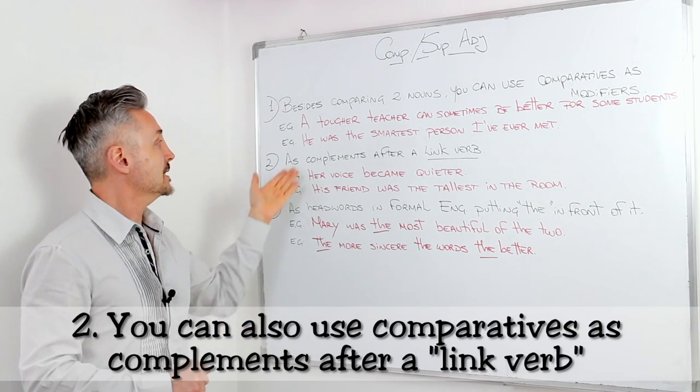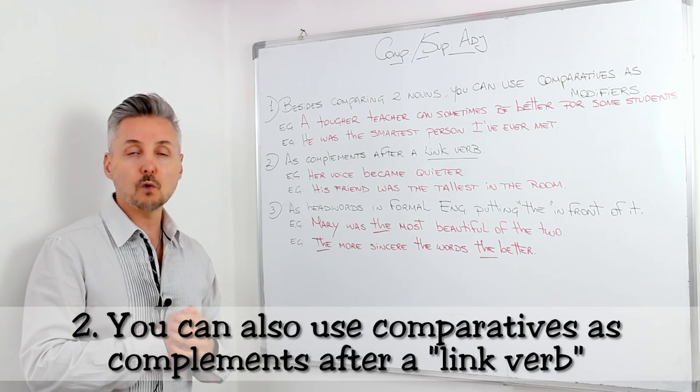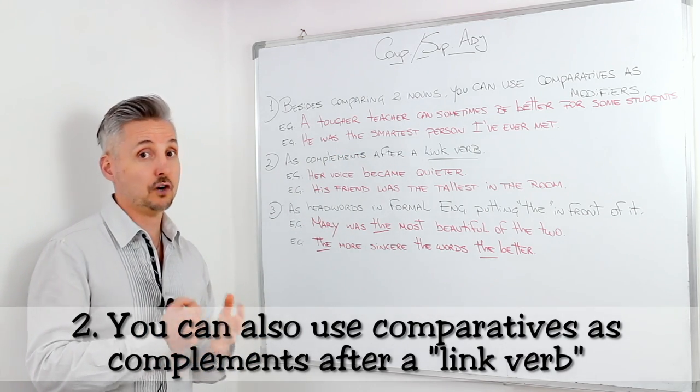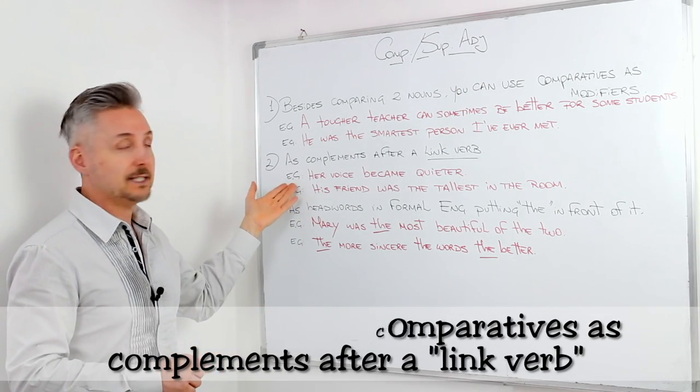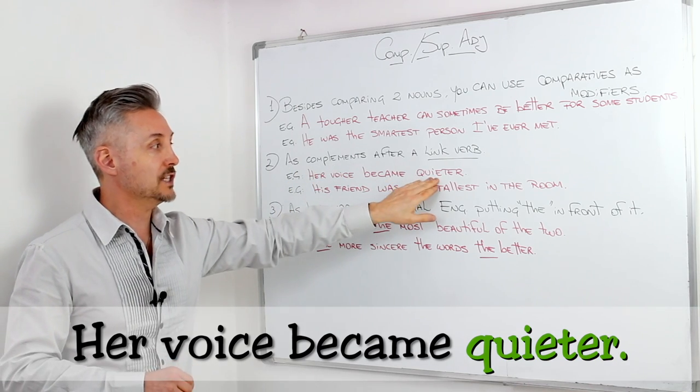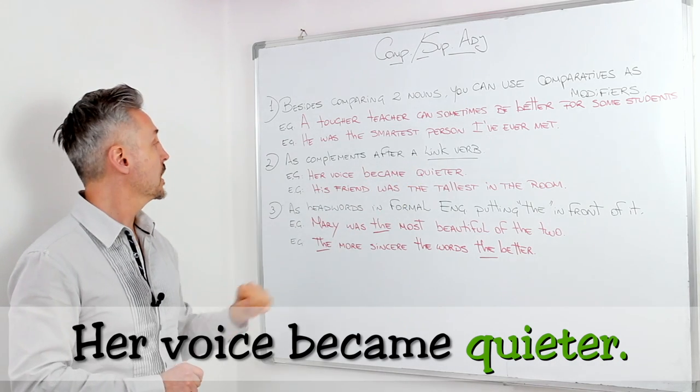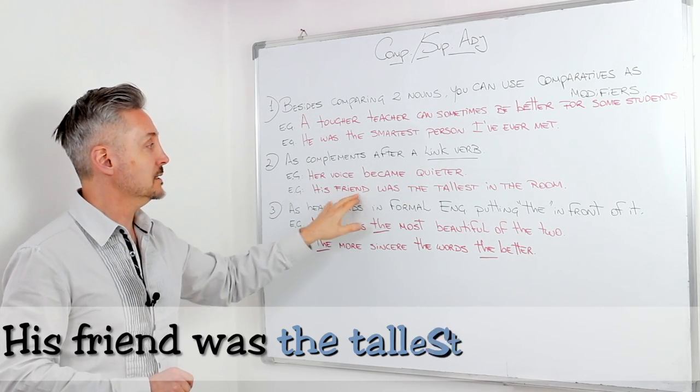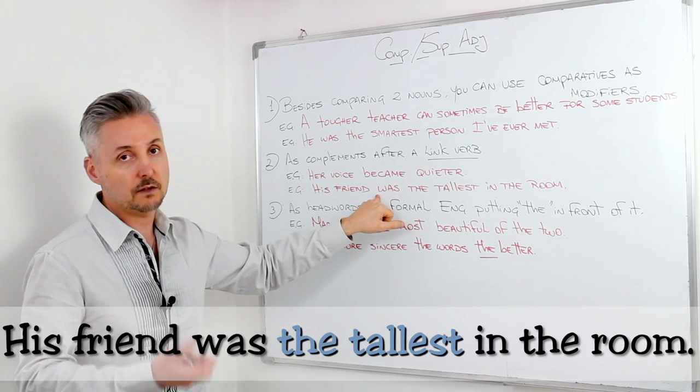Number two. As complements after a link verb. If you want to watch a lesson on linking verbs, you can click here. So, for example, her voice became quieter. Became, here is the link verb. Or, his friend was the tallest in the room. Here was, the verb to be, is the link verb.